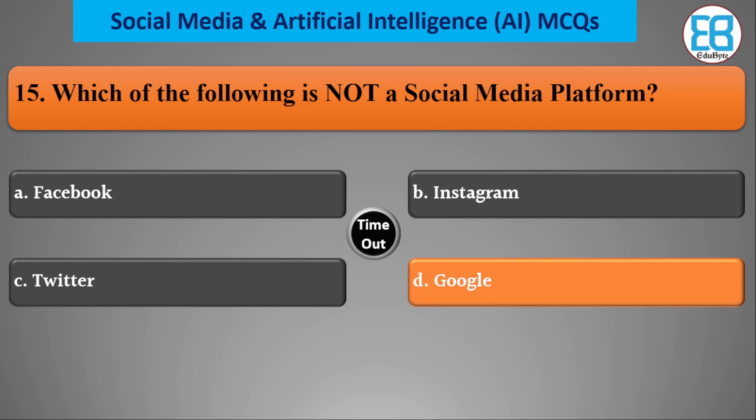Which of the following is not a social media platform? Options are Facebook, Instagram, Twitter, and Google. The correct option is Google, because Google is a search engine, not a social media platform. Thank you so much.